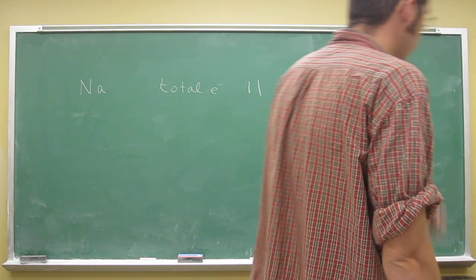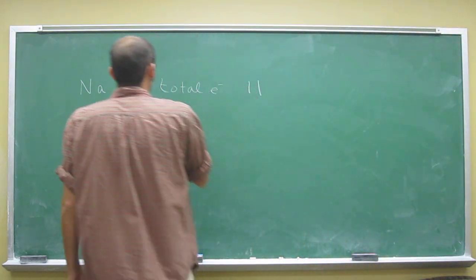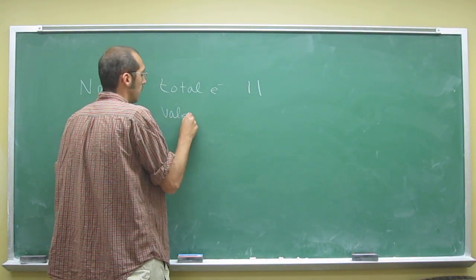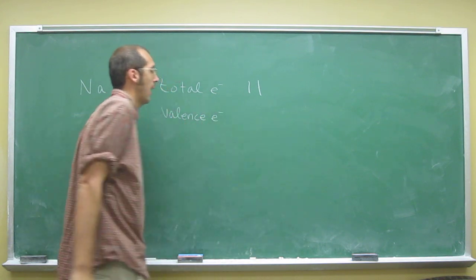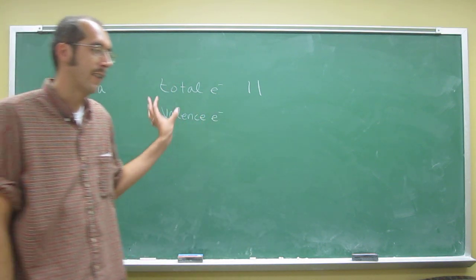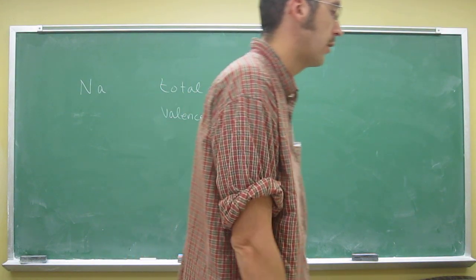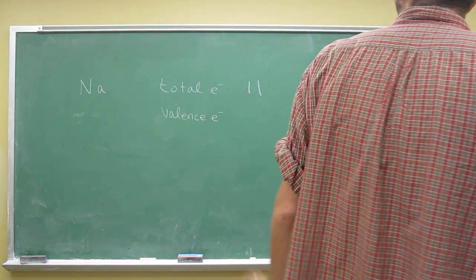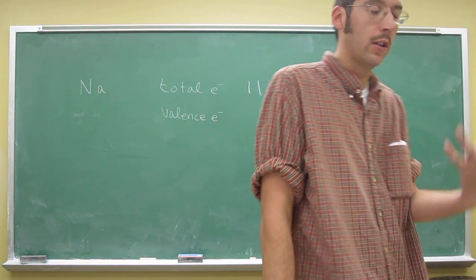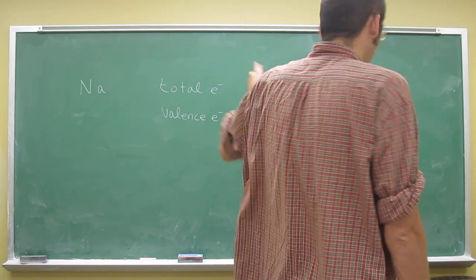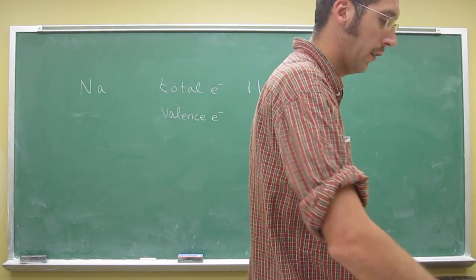So number of valence electrons. The valence electrons, remember, that's just the outer energy level. This isn't asking you to do the electron configuration. If it helps you to do the electron configuration, then just do it, and then you can just get all of this information from that.